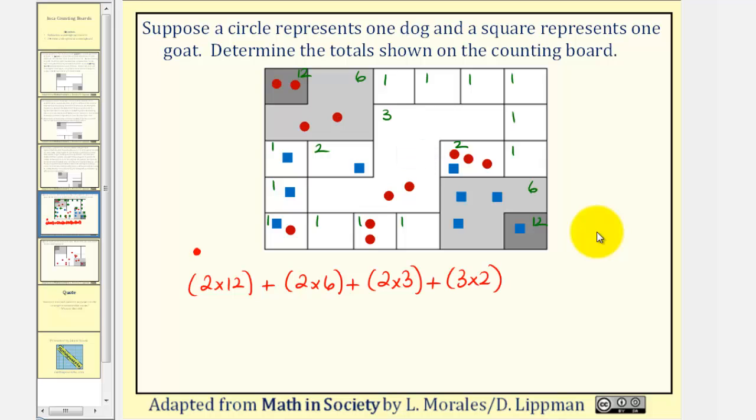And now, we're down to the compartments that are worth one each. There are three red pebbles here, so we have plus three times one. So, we have a total of twenty-four plus twelve, plus six, plus six, plus three. So, we have twenty-four plus twelve, that's thirty-six, plus six, that's forty-two, plus six is forty-eight, plus three is fifty-one. And each red circle represents one dog, so we have fifty-one total dogs.